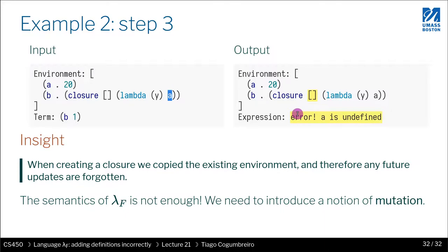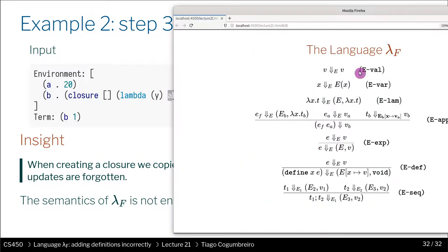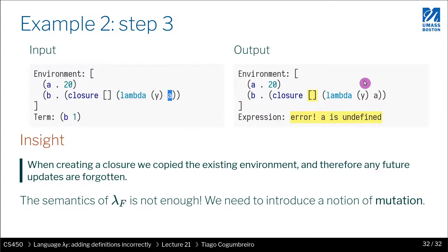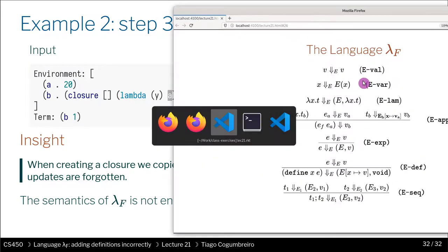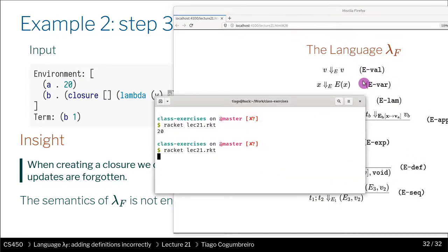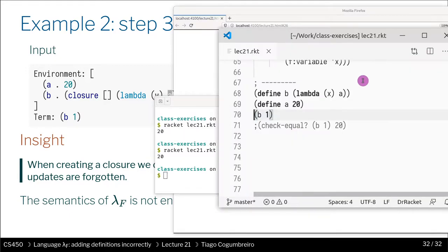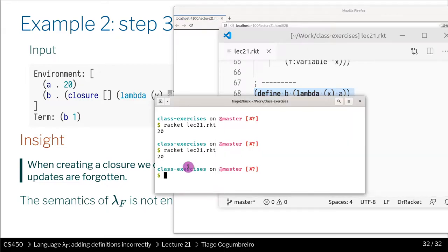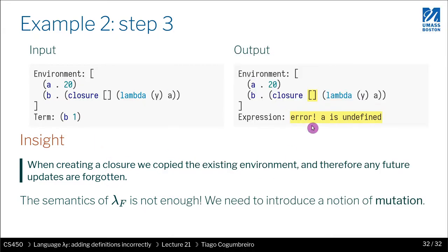So what this is saying is that the semantics that I'm showing here of lambda F does not match the execution of the program. I ran the program, and it worked fine. It should return 20. I executed this program that matches the program that we're executing. But the result is completely different. Here we got 20, but our semantics does not capture this behavior.